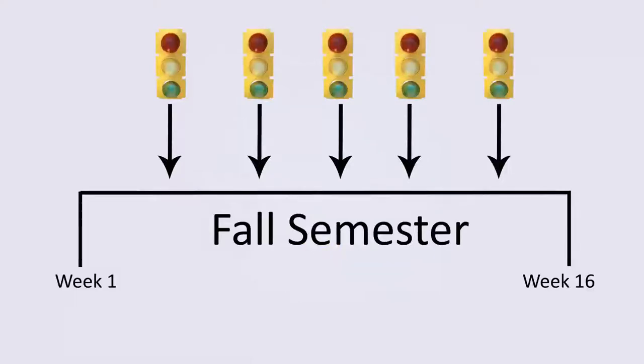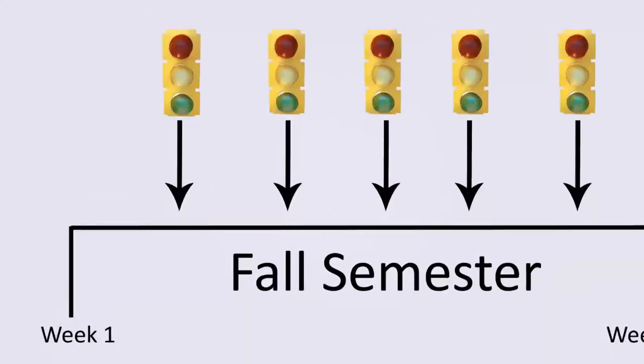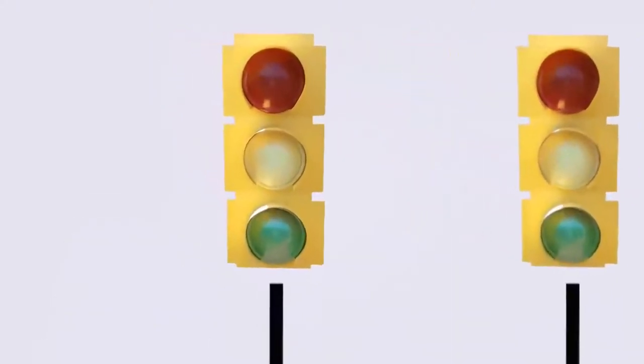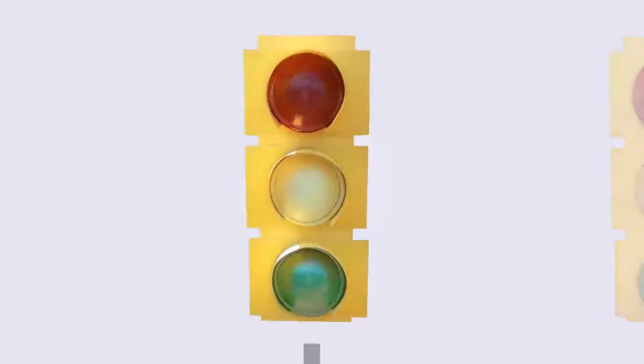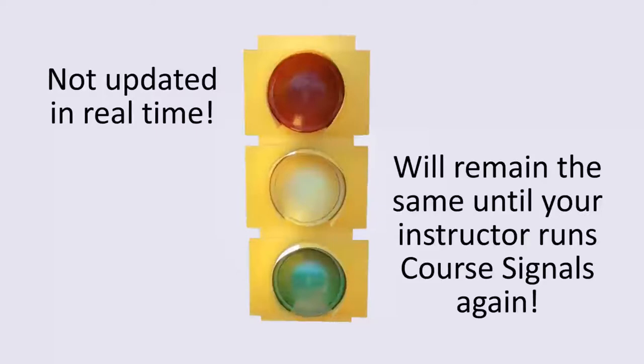Your instructor may run signals throughout the course. It's up to them to decide how often they run it. When your instructor runs Course Signals, you'll see a stoplight when you log into Blackboard. It isn't updated in real time, so this stoplight will remain the same until your instructor runs Course Signals again.